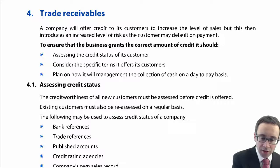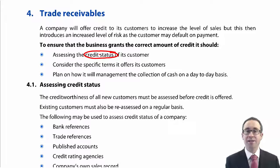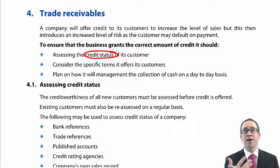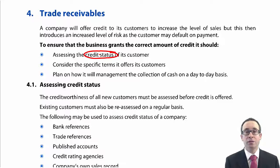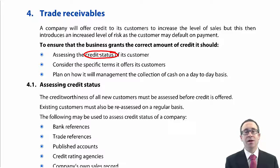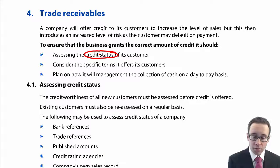First, we need to consider the actual credit status of our customer. The customer is looking to enter into credit sales — they're making purchases from us and we are offering them the sales. We need to see whether that customer is worthy of granting credit — i.e., do we expect them to pay that cash back in the future? Do they have an ability to pay the cash to us in the future? Once we've assessed the creditworthiness of the customer, we then need to look at the specific terms we offer.